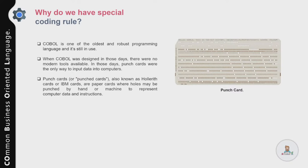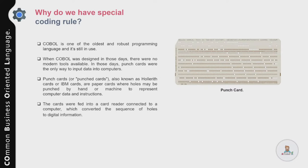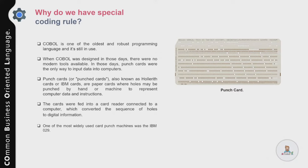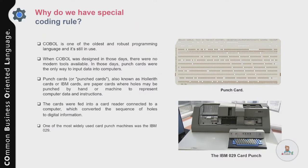These cards or stacks of cards were fed into a card reader connected to a computer, which converted the sequence of holes into digital information. On the right-hand side of the screen you can see a sample punch card with certain holes that represent information readable only by a punch card reader. The punch card reader reads the holes and translates them into digital information. One of the most widely used punch card machines was the IBM 029.